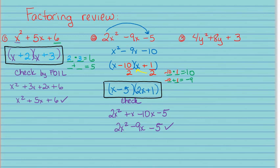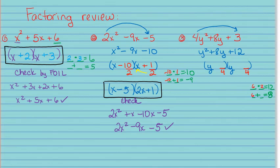The last one works the same way. I'm going to take the 4 and multiply it by the 3, changing it to 12. It's going to factor into a binomial with a y and y, but I'll have to divide by 4 because I changed the problem. I need two numbers that multiply to give me 12 and add to give me 8 — those are positive 6 and positive 2.